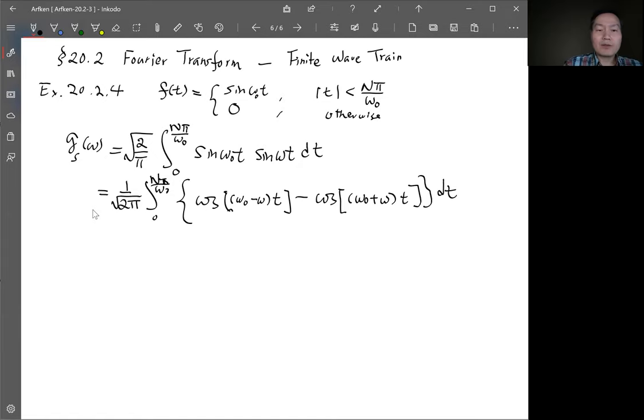And after the integration this cosine you integrate becomes sine. And then you evaluate at upper limit and lower limit. The lower limit for sine function is all zero because substitute zero to the sine function gives you zero so only the upper limit will count. So there will be two terms. One is omega zero minus omega. One is sine of this. Sine of omega zero minus omega times t becomes n pi over omega zero.